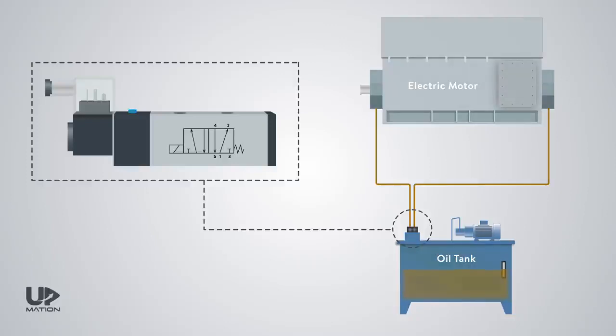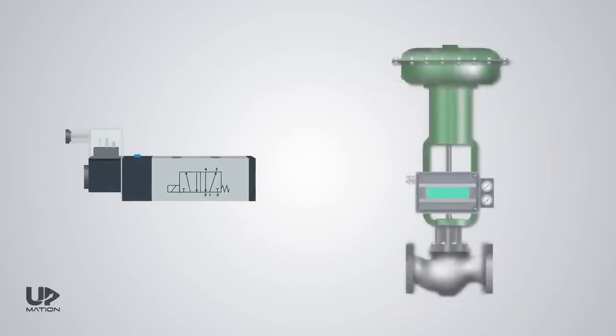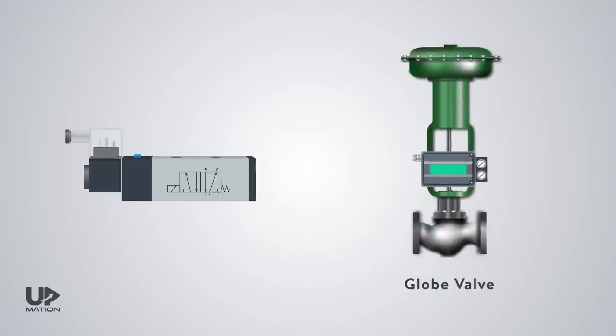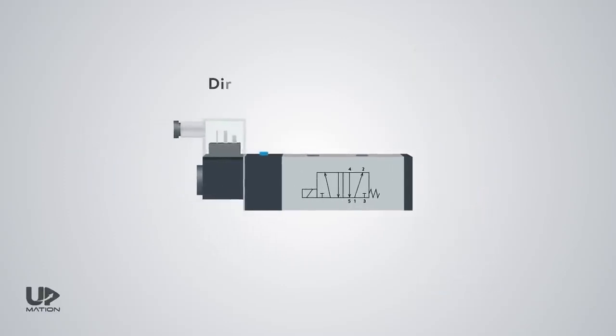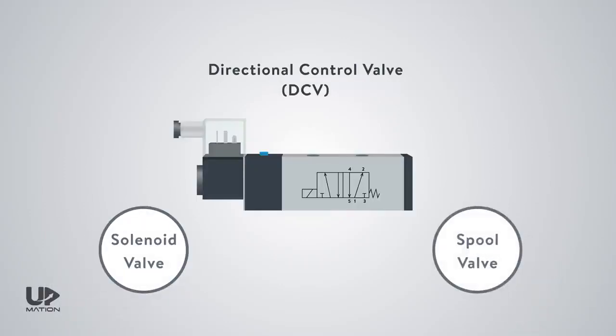Yes, you heard me right, there are a variety of well-known control valves in the industry, such as glove valves, that you can watch our video about from the link in the description. But today's video is about different types of control valves, known as directional control valves or DCVs for short. You may hear of them as solenoid valves or spool valves as well.